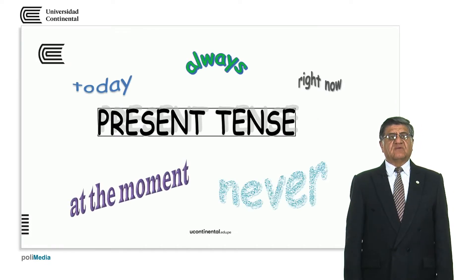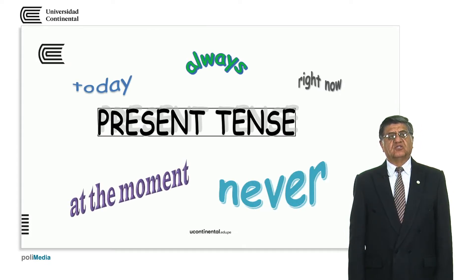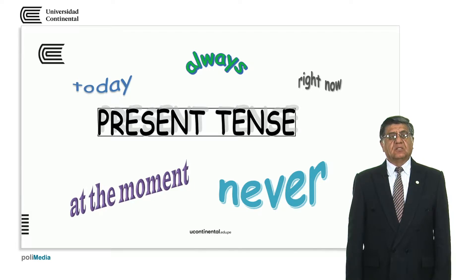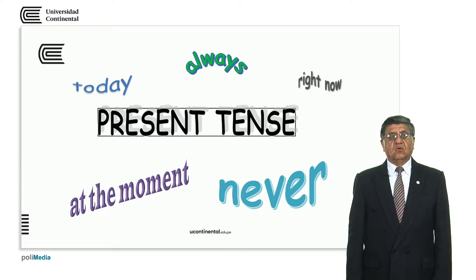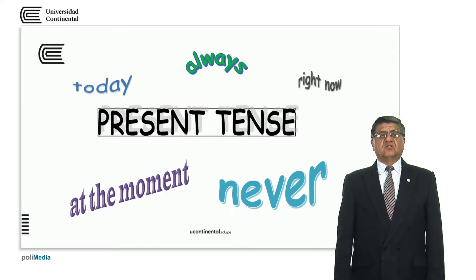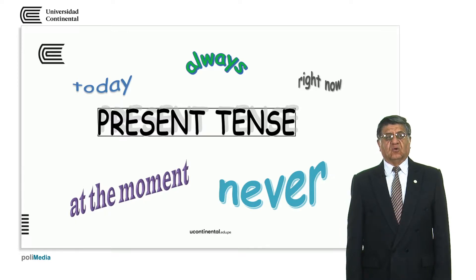In the present tense, we have some keywords like today, always, right now, at the moment, and never. At the moment and right now mean the time we are talking. Always means something that regularly happens, and never is the opposite of always. Today is the day we are talking.